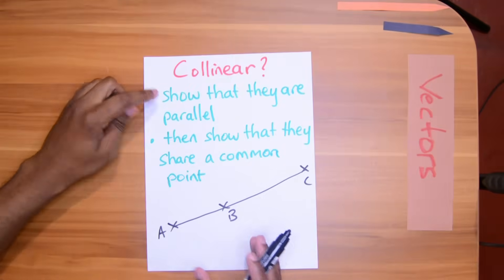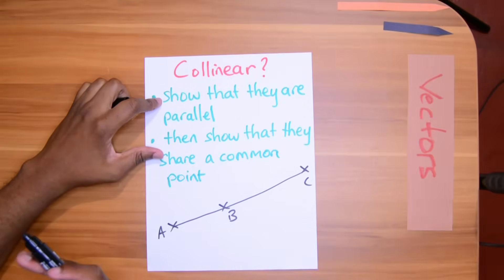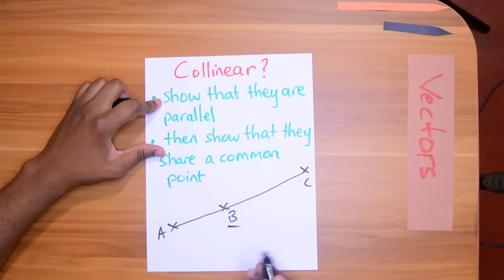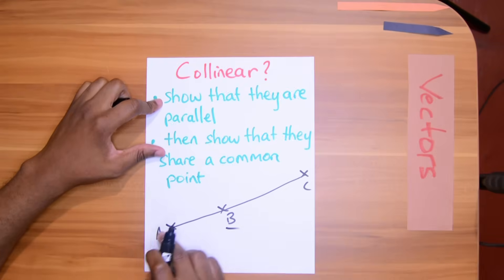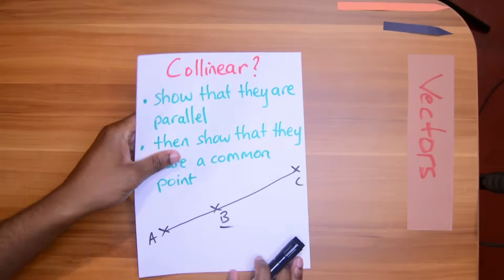To do this, firstly you will have to show that AB and BC are parallel using what I just showed you. And then you will show that they share a common point. The common point they share is B. That will show that they lie on the same line. And you will do that and you will collect 2 to 3 marks.